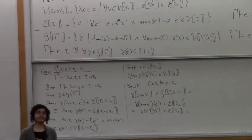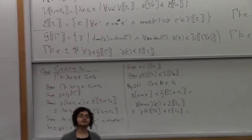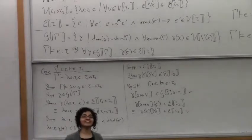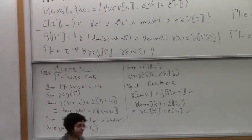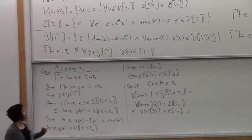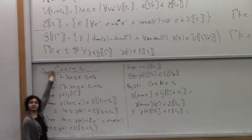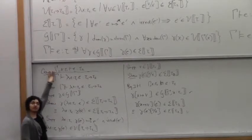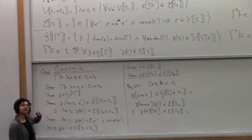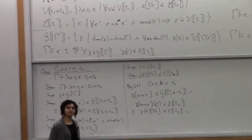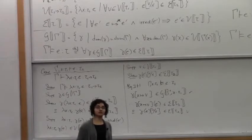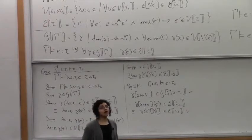So we're doing induction over the typing derivation. Tau 2 has a smaller type and therefore a sub-derivation — that's why we get to use that induction hypothesis. We have a typing derivation that ends with this, and the typing derivation that ends with this is a smaller derivation. Therefore, we can apply the induction hypothesis to conclude this.